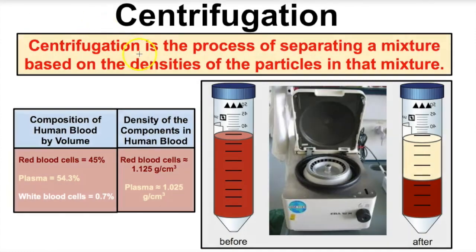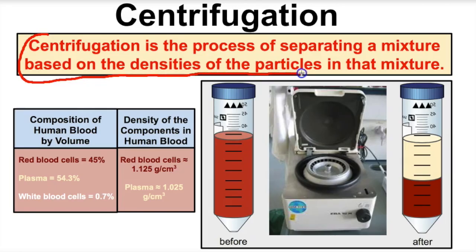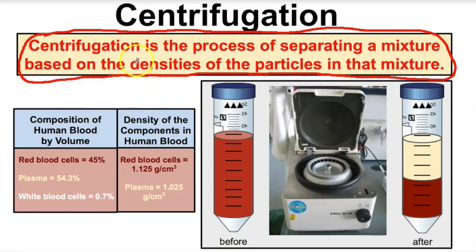The very first separation technique we're going to talk about is called centrifugation. We use this to separate a mixture. Centrifugation is the process of separating a mixture based on the densities of the particles in that mixture. So if we were to ask what physical property does centrifugation work off of, it's based on the density of the particles in that substance.